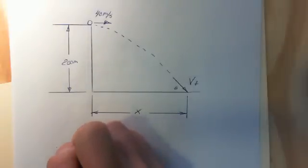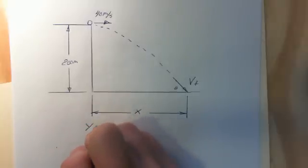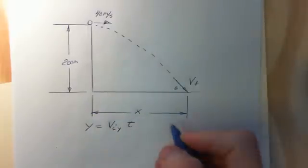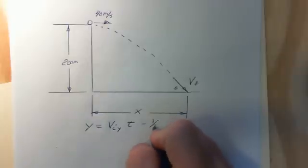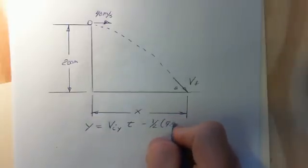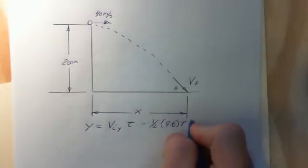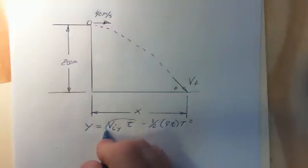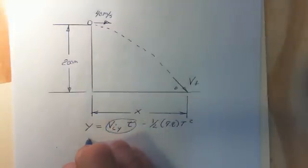We know that vertical displacement is equal to our initial velocity in the y direction times time minus 1 half times 9.8 times time squared. We know our initial velocity in the y direction has to be zero. So we can ignore this part. So our equation becomes very simple.